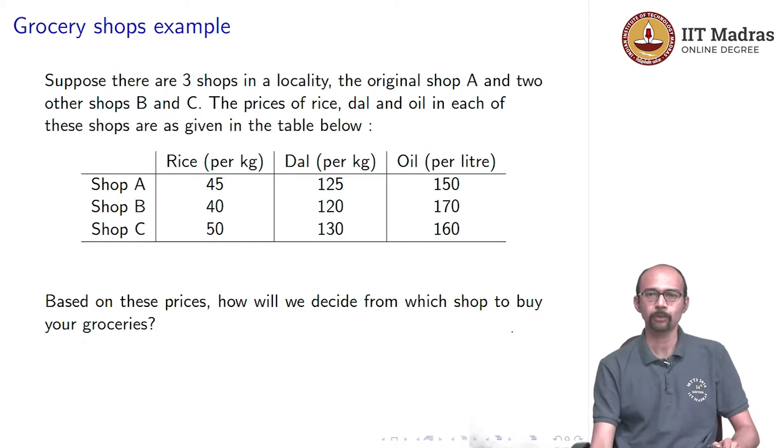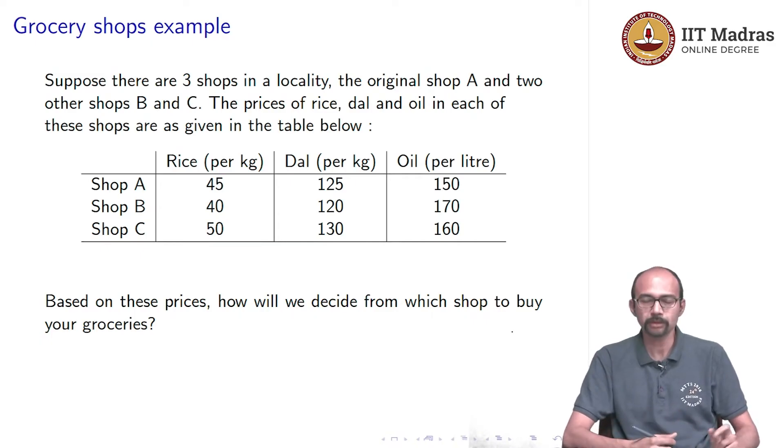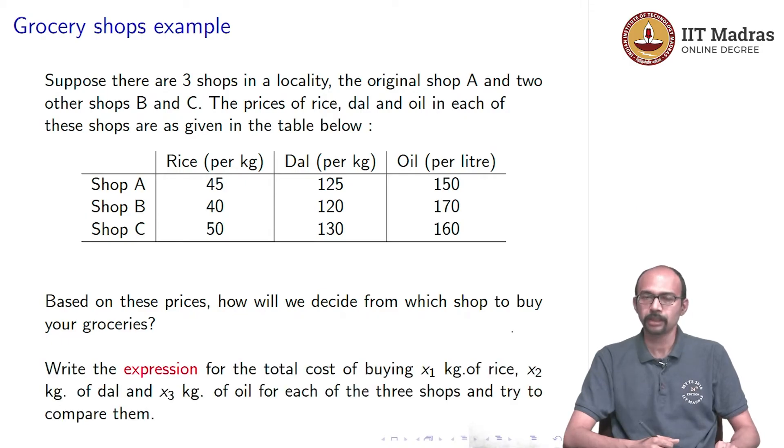Now, someone asks the caterer, why do you always buy from shop A? Is there a good way of deciding which shop to buy your groceries from? In order to do this, what do we have to do? We have to check out the cost for buying x1 kgs of rice, x2 kgs of dal and x3 liters of oil from each of the shops, then compare them and see which one is less. Of course, let us assume that all of them have the same quality and there is no difference as such.